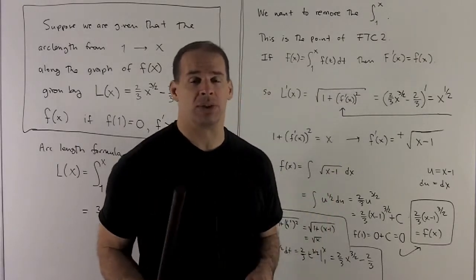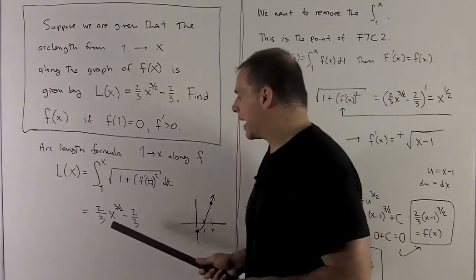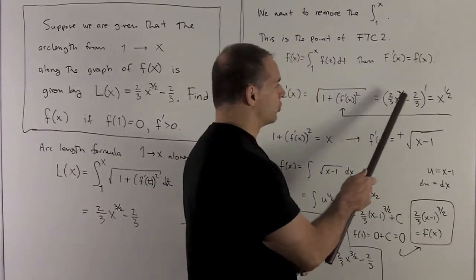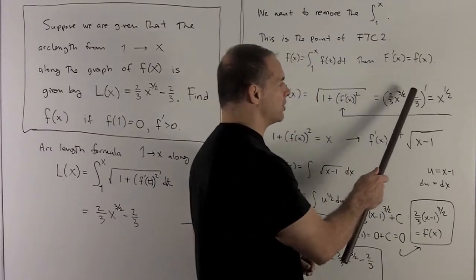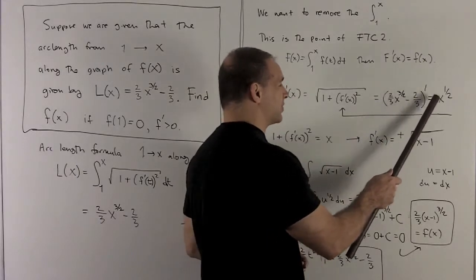But we also know that's equal to the derivative of what we're given by assumption. So that's going to be the derivative of 2/3 x^(3/2) - 2/3. That's going to give me x^(1/2).